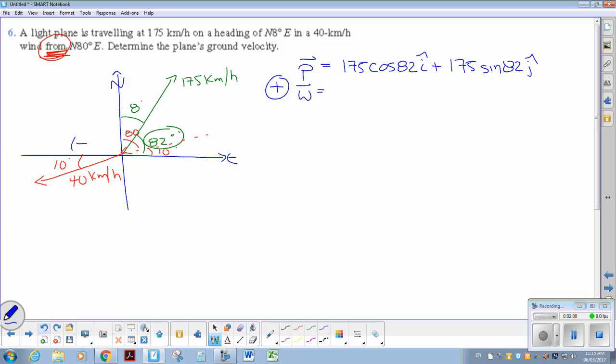Wind, it has a negative x component, so negative 40 cos 10i, and it has a negative y component, so negative 40 sin 10j.